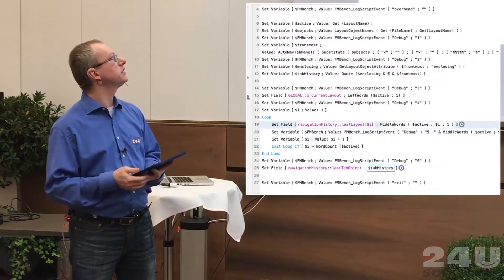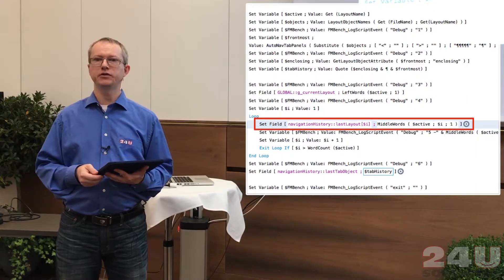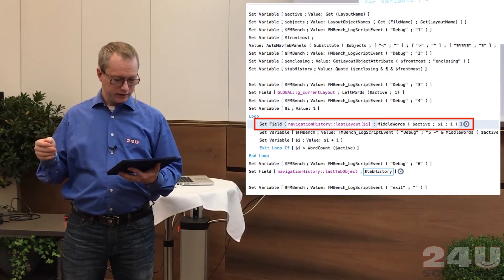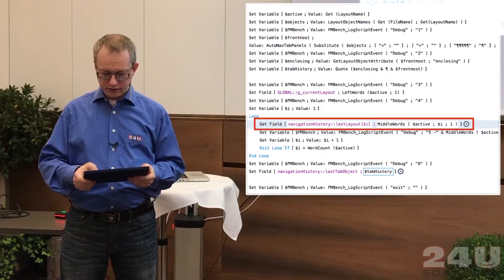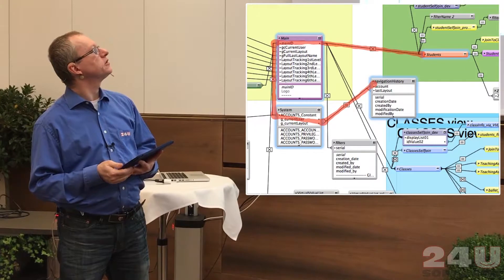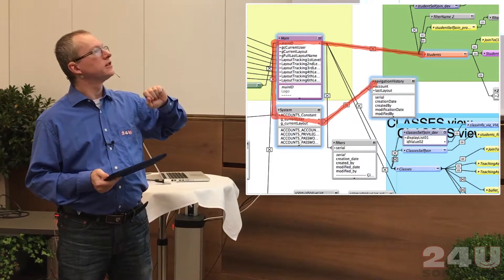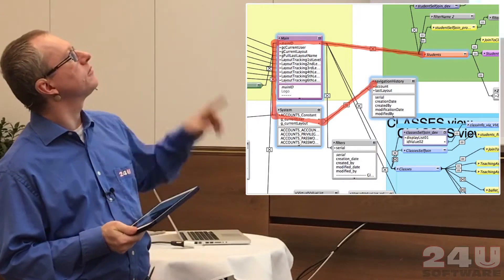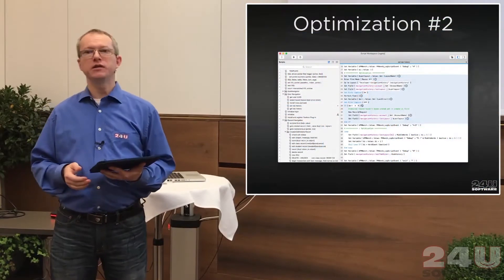We identified a single script step that was taking about 10 seconds every time it was executed, and it was executed more than once per layout switch. The purpose of this Set Field was recording the current switch, so adding something to the history. The reason why this was slow was this relationship: because the current layout was based on the student's table, and the navigation history was three relationships away from the current layout, two of which were not simple one-to-one relationships but complex predicates being used.